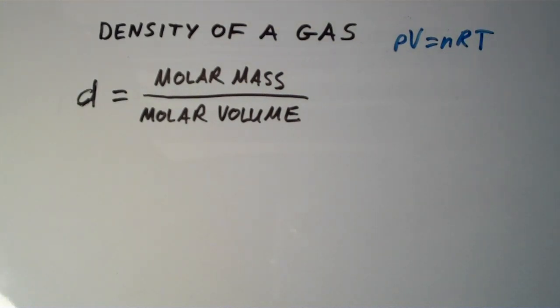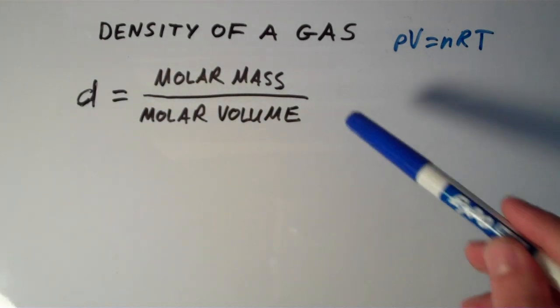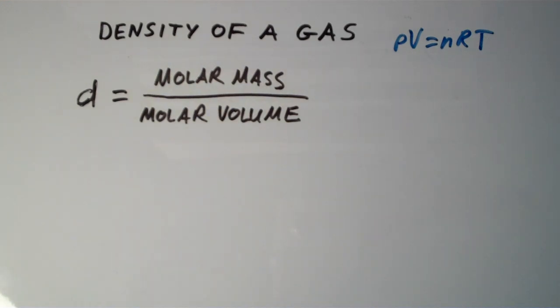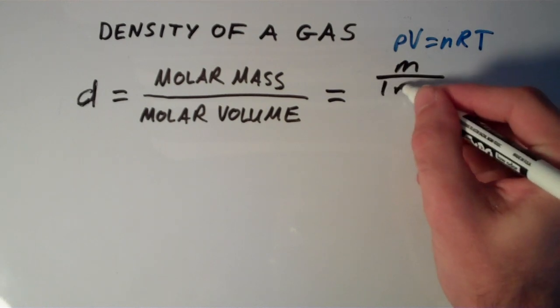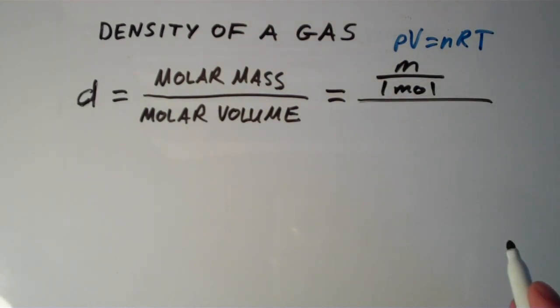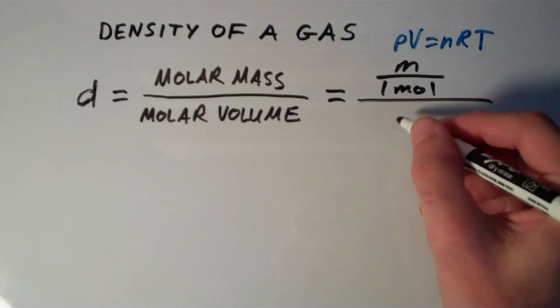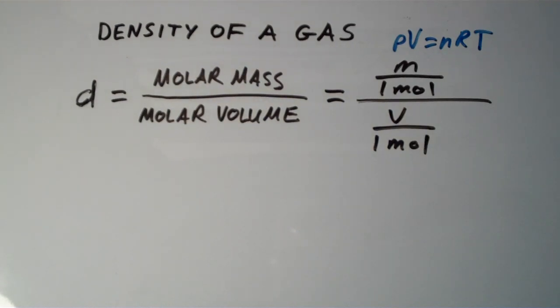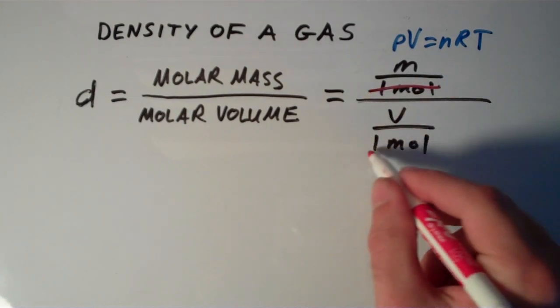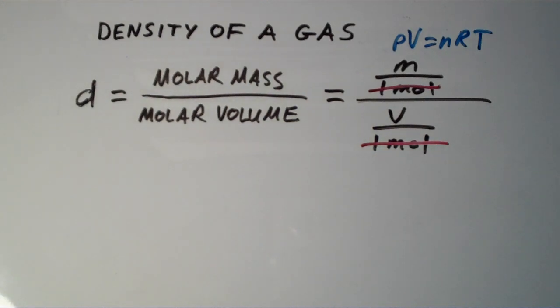One of the things that can help you get started with calculating the density of a gas is to recognize that the density of a gas is the molar mass of the gas divided by the molar volume of the gas. This is easily justifiable because the molar mass of anything is just the mass, m, over one mole, and the molar volume of a gas is the volume per one mole. The one mole cancels, and I'm left with mass over volume, which is what density is.